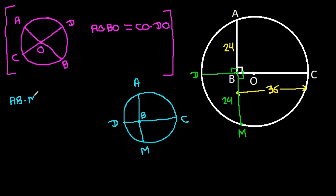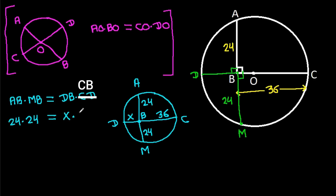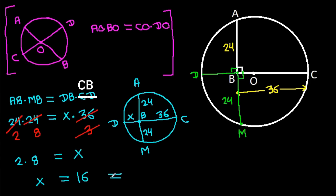So, AB times MB will be equal to DB times CB. AB is 24, MB is 24, and CB is 36. Suppose DB is X. Then 24 times 24 is equal to X times 36. That gives us 576 = 36X, so X equals 16. DB is 16.